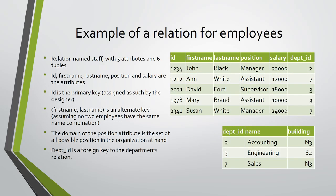Another relation for employees may have six attributes: identification number, first name, last name, position within the enterprise, annual salary, and the department the employee works in. The identification number is the primary key. If we assume that no two employees have the same name combination, then the set of first name and last name is an alternate key, which is composite. The domain of the position attribute is the set of all possible positions within the enterprise. The department identification code is a foreign key to the departments relation.